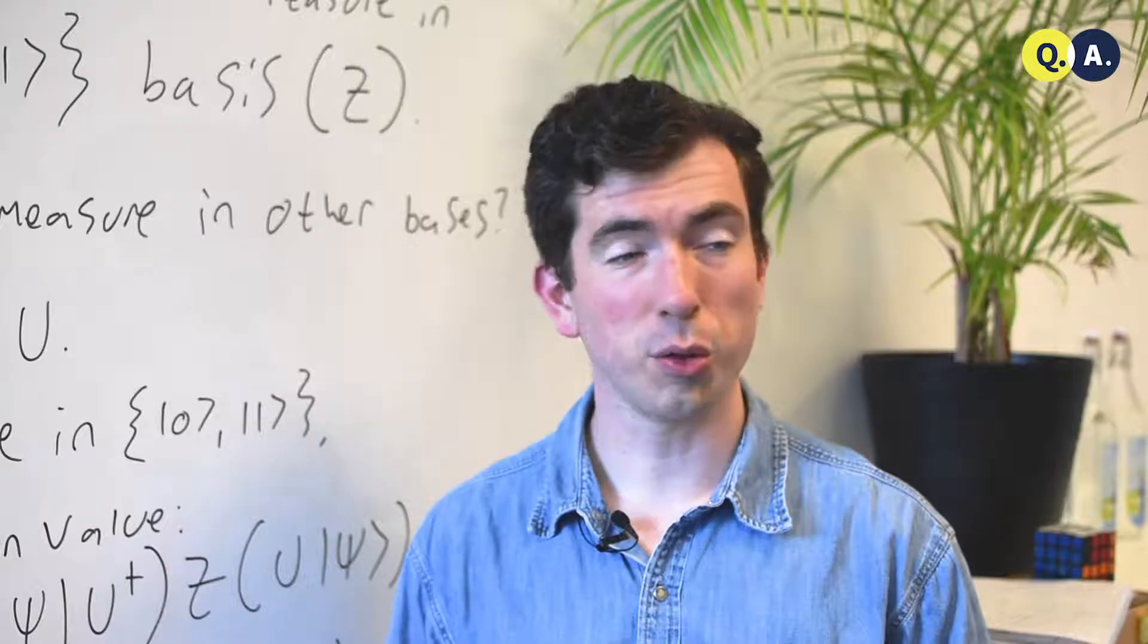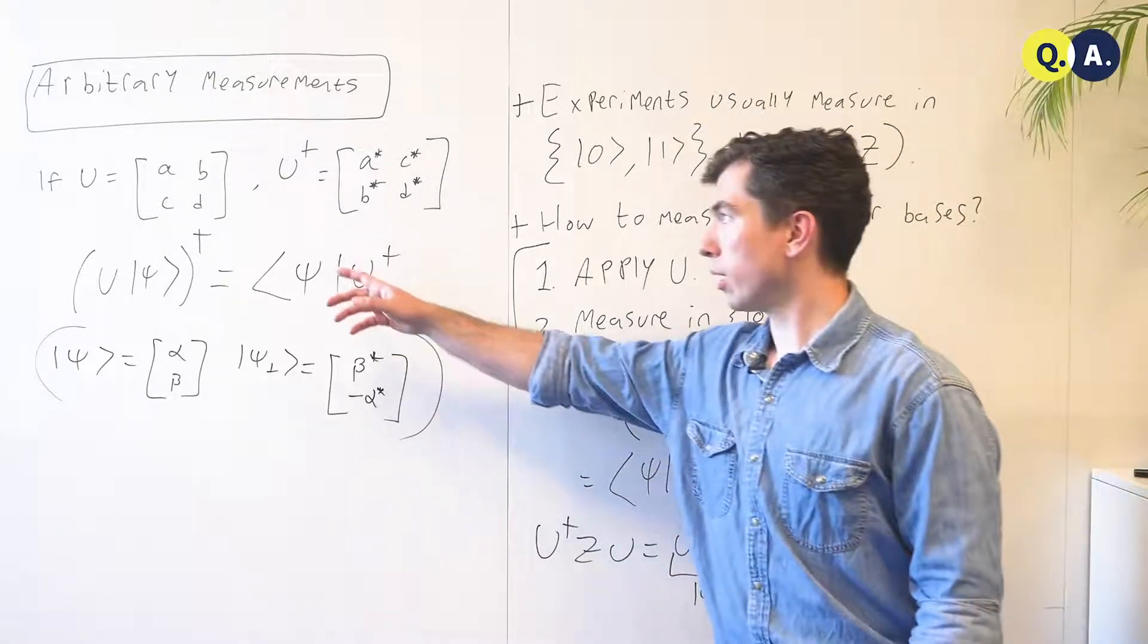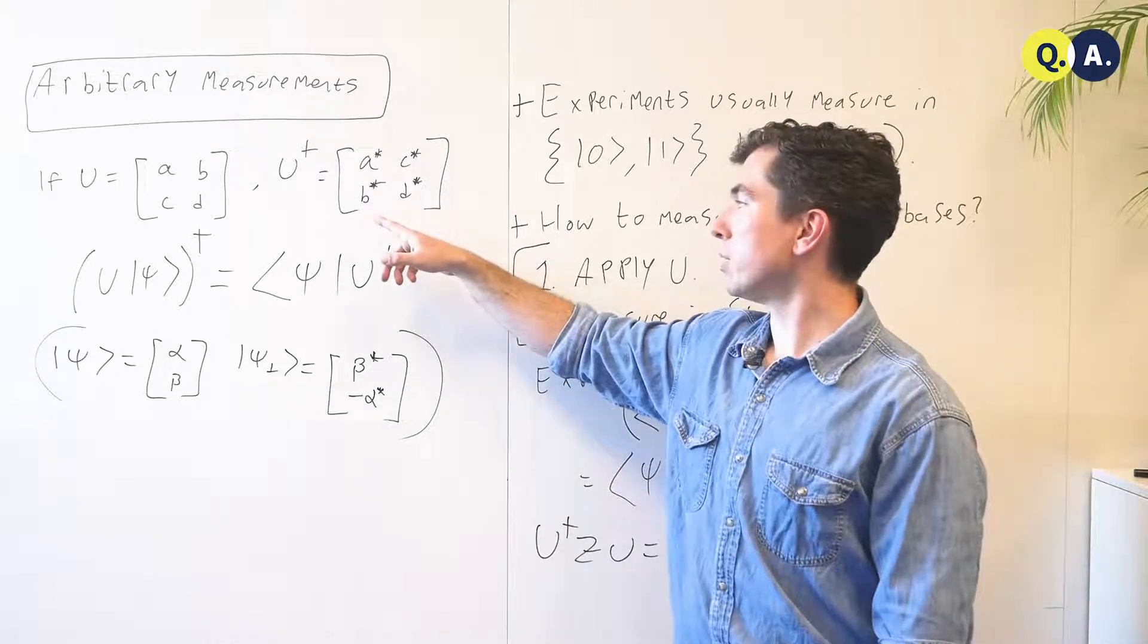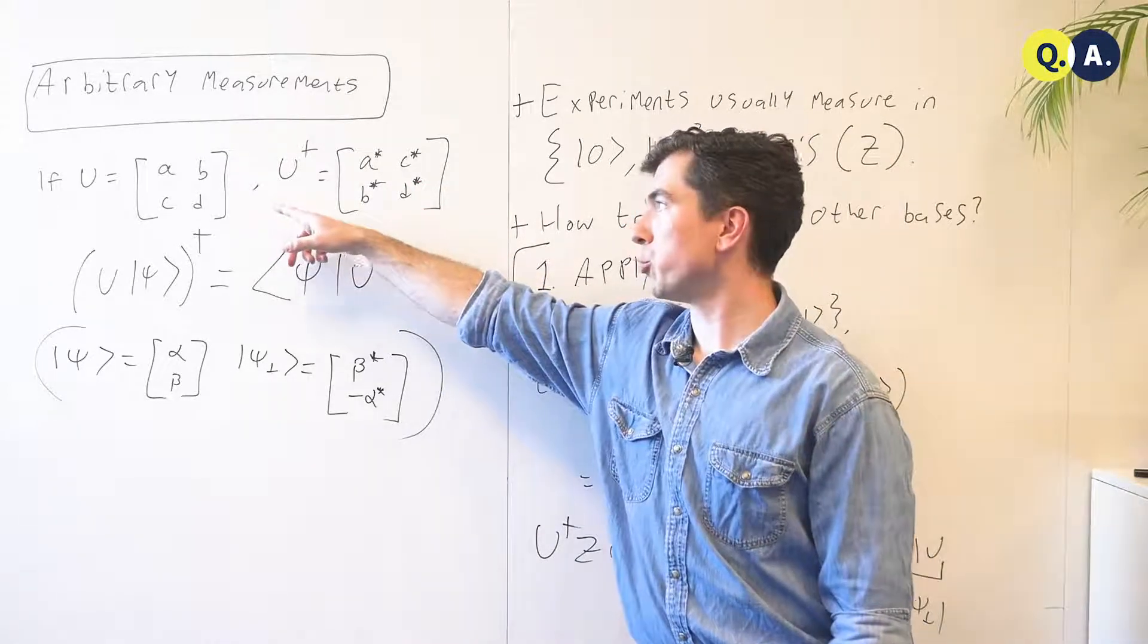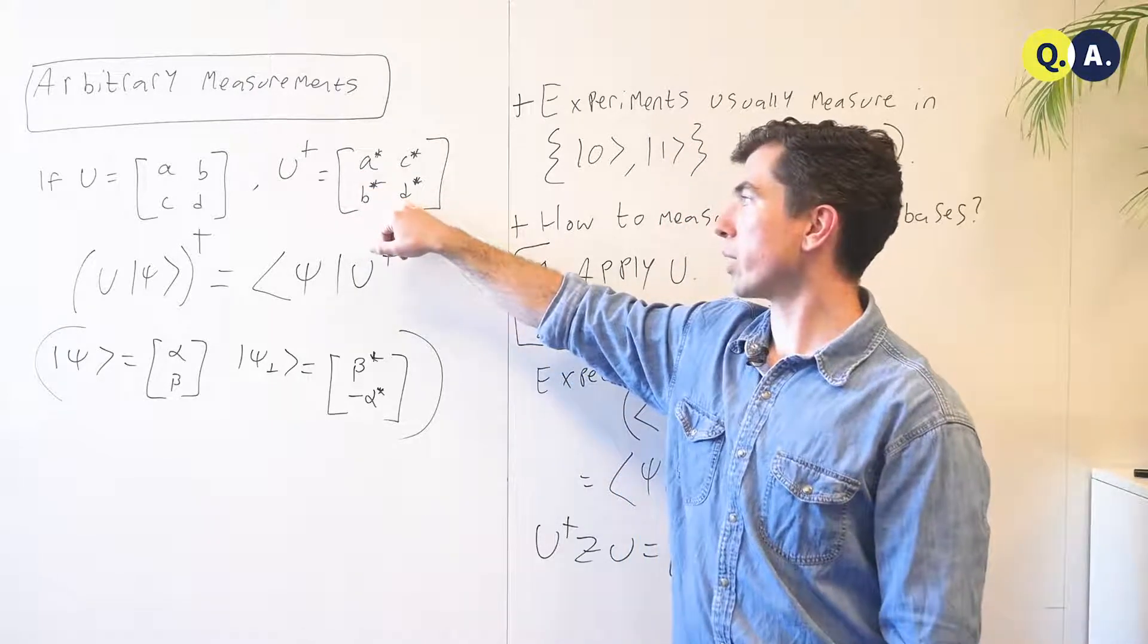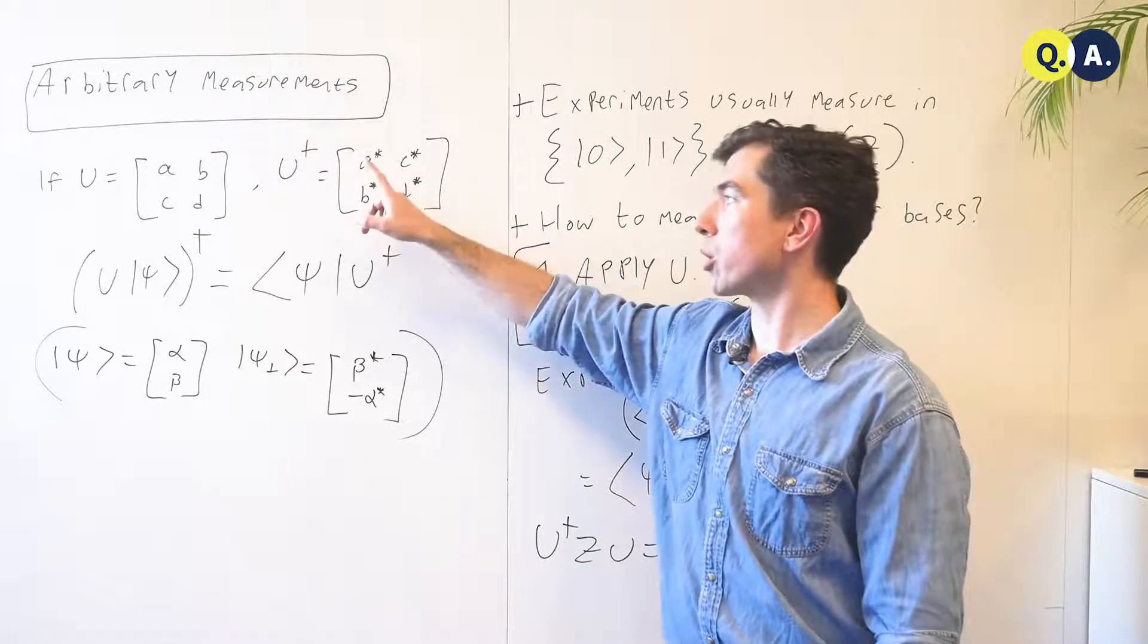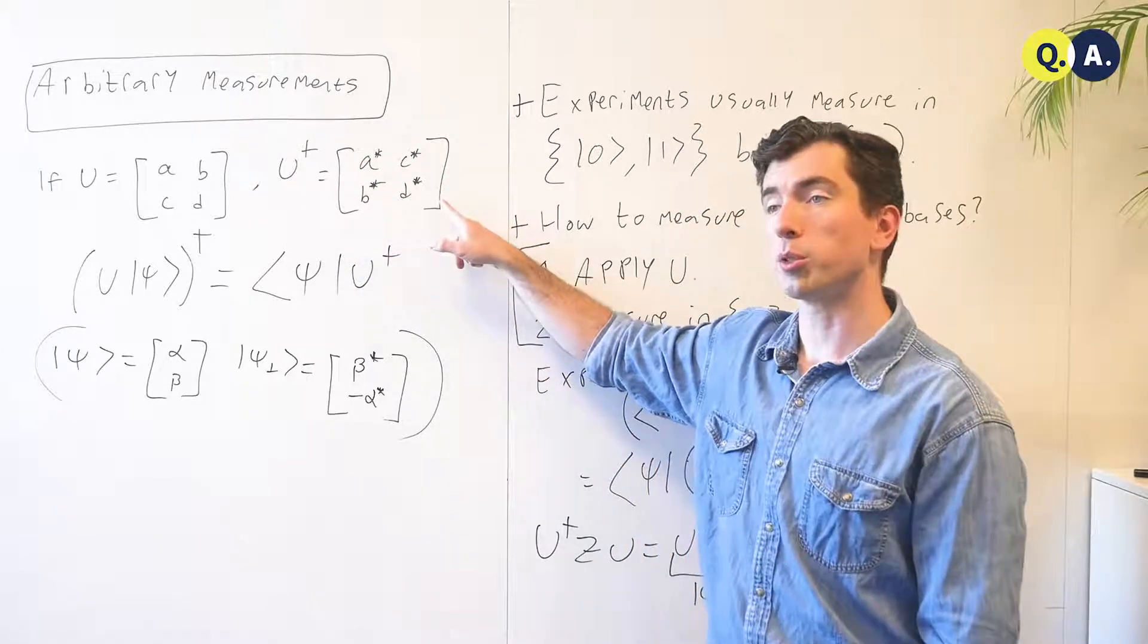First, we have to review a few important facts. The conjugate transpose of a matrix, or vector, is given by first taking the transpose, so for this 2x2 matrix that leaves the diagonal elements in the same place and exchanges the elements b and c here, but also taking the complex conjugate of each element in the matrix.